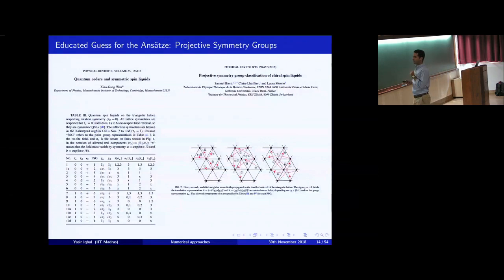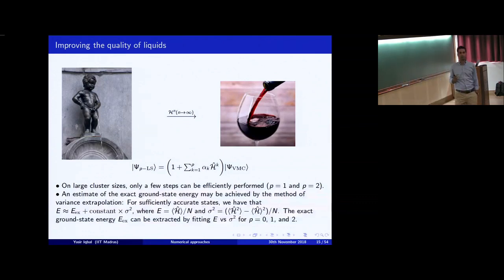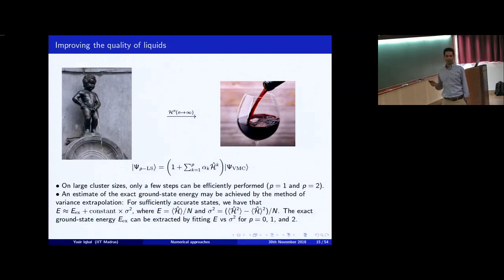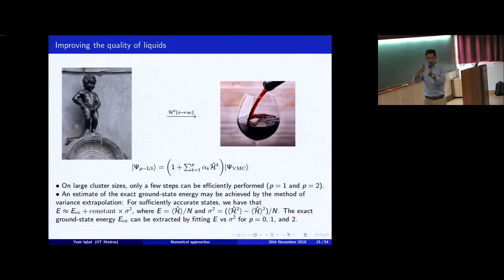The general approach in the community is that this Monte Carlo starts with some quality of trial state, and then you can improve the quality by applying powers of the Hamiltonian. If you apply an infinite number of steps, you can land up with some excellent result; if you only apply a few Lanczos steps, maybe you end up with something more modest. You have this trial wave function that was constructed, apply powers of the Hamiltonian on large clusters — only a few steps can be efficiently implemented. You have a tridiagonal matrix whose matrix elements you compute stochastically, and an estimate of the exact ground state energy can be achieved by the method of variance extrapolation.